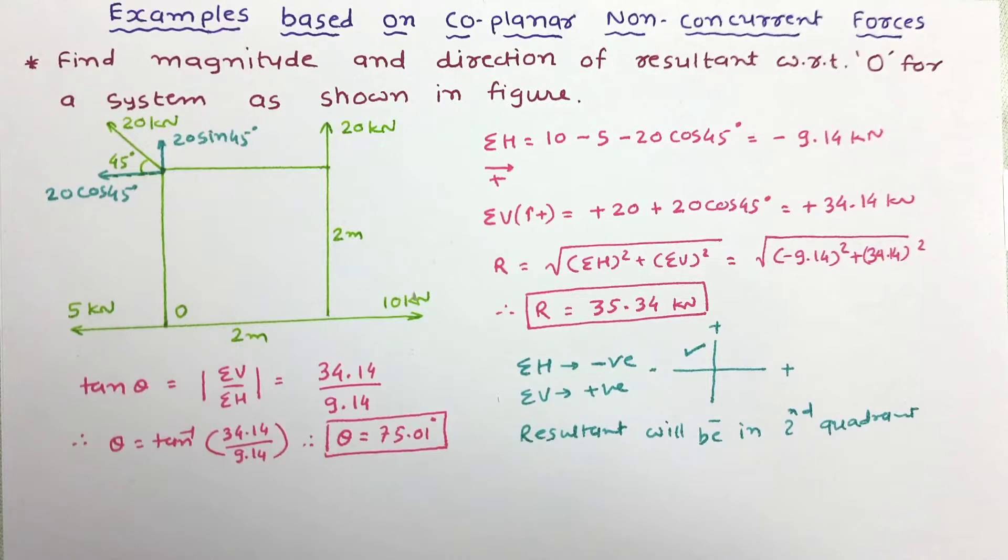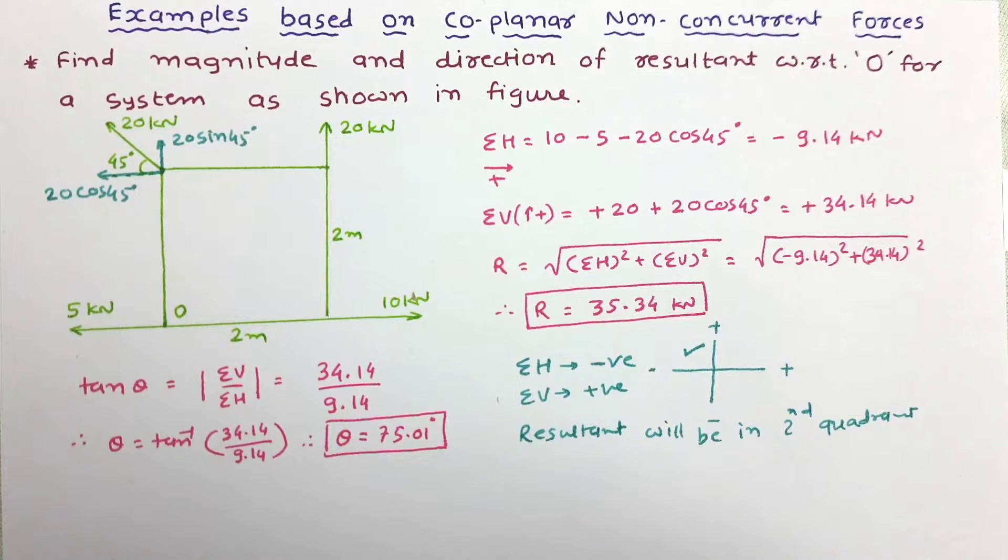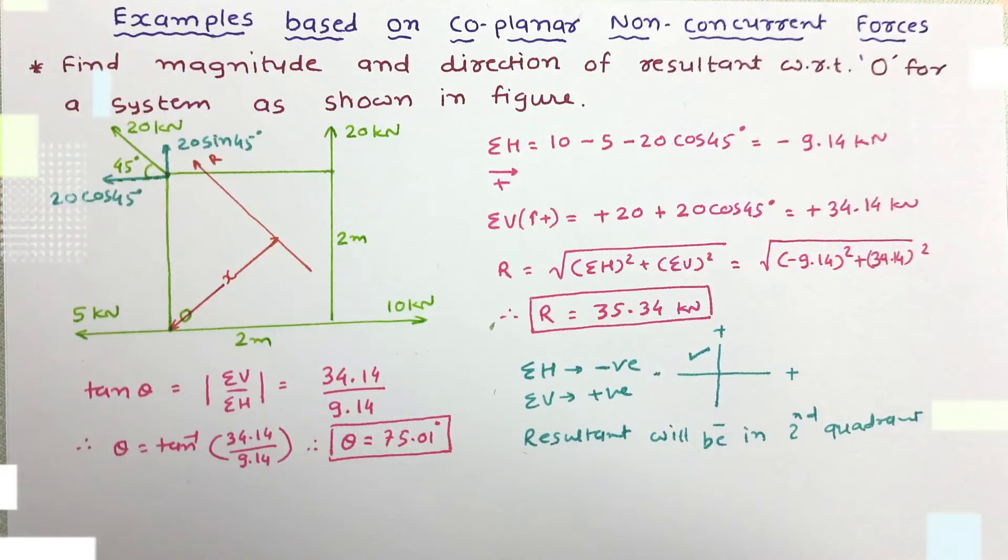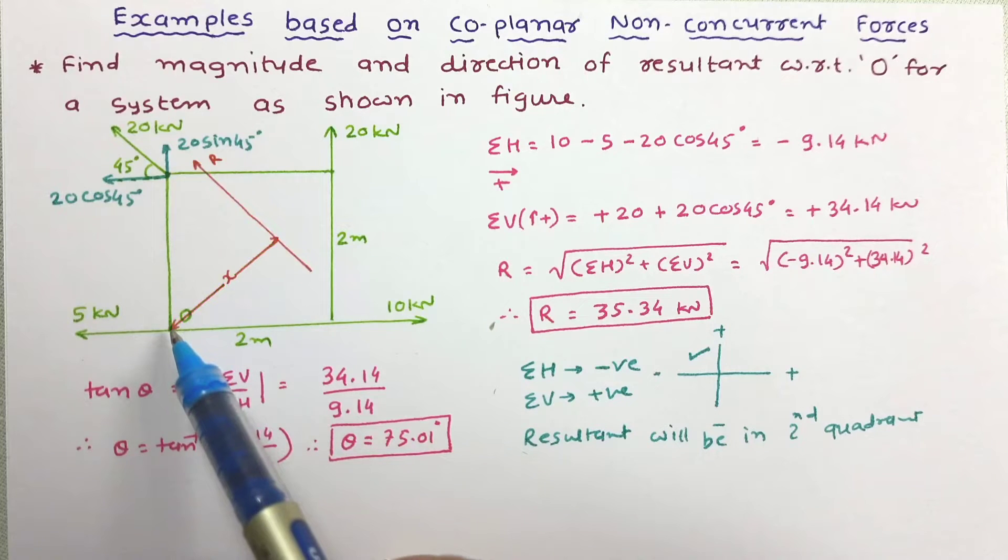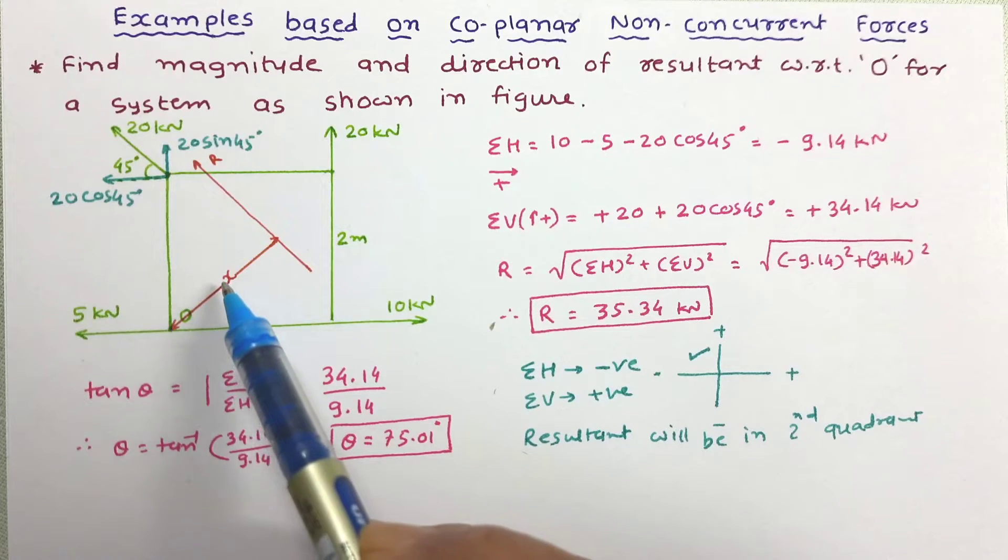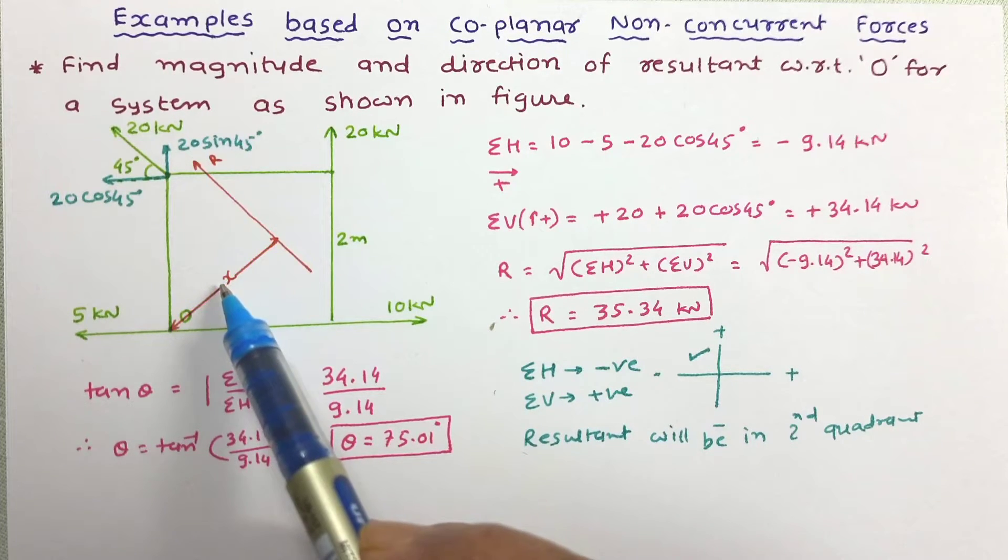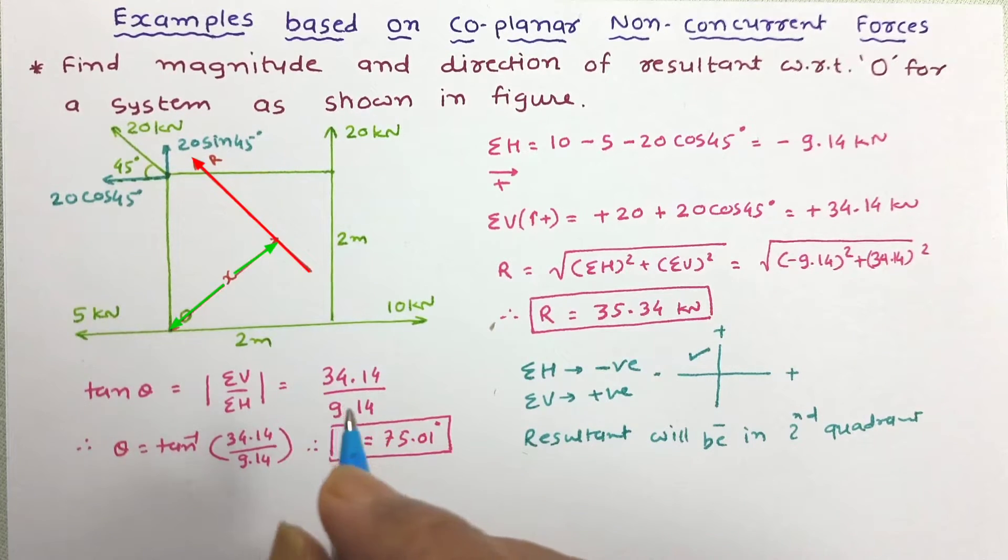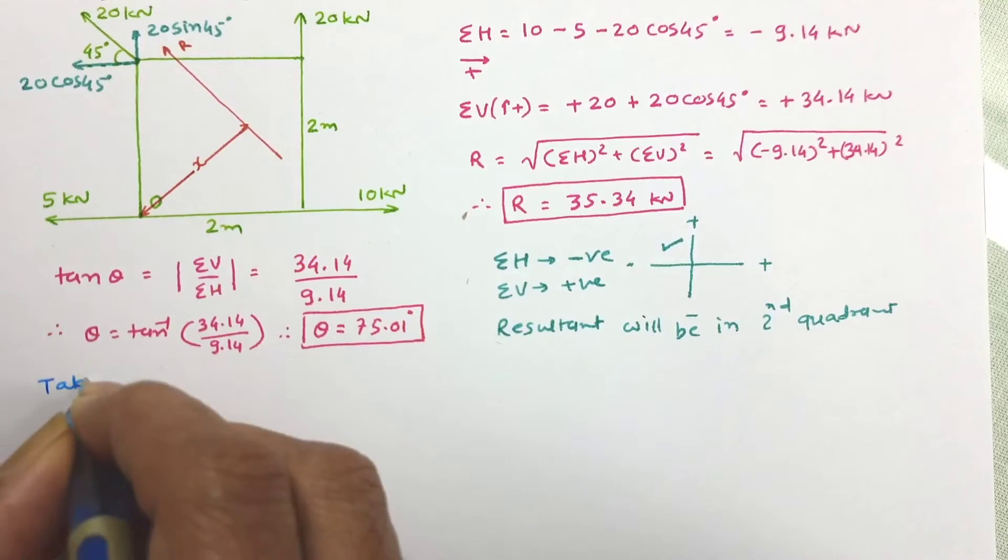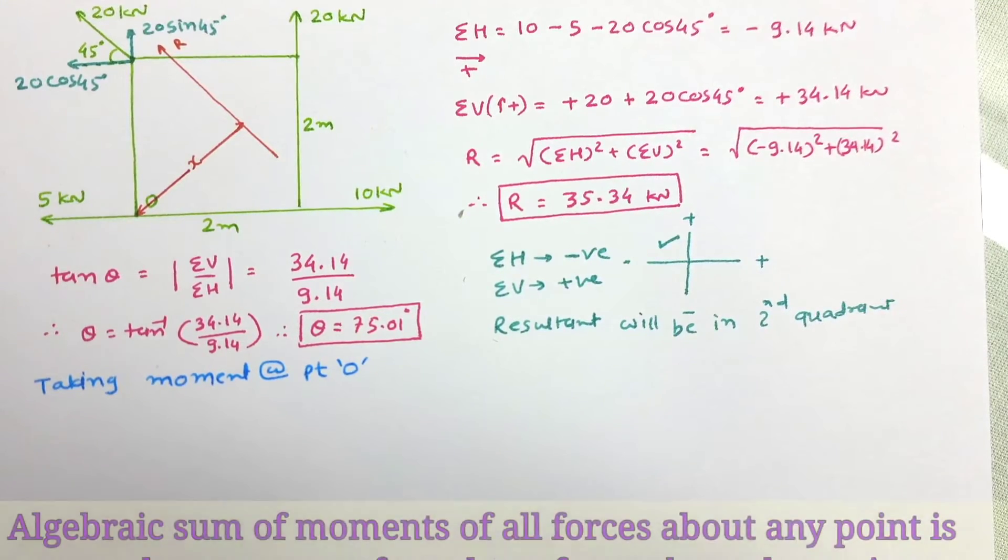Now let us determine the position of resultant force with respect to O. Let us assume that R is lying in second quadrant and it is at distance x, perpendicular distance x from point O. Now let us take moment about point O.